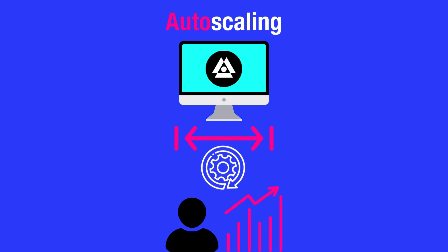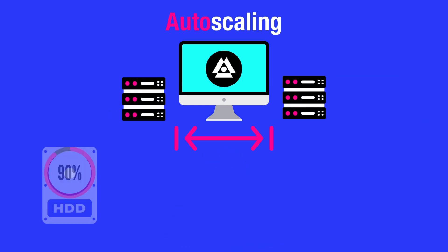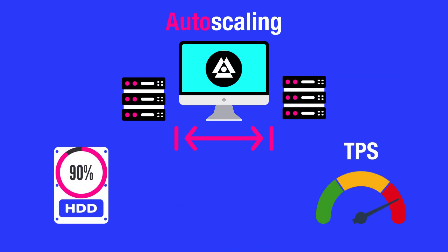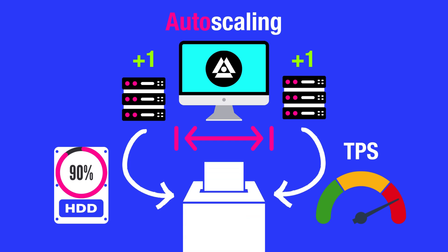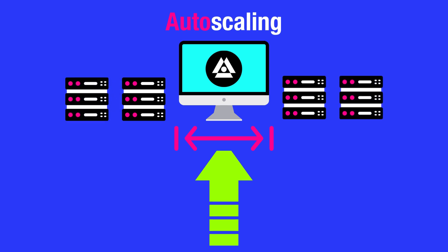Each node comes to consensus independently on the optimal network size, and then these votes are collected and tallied to determine the outcome. If the network needs to scale up, it adds more nodes.